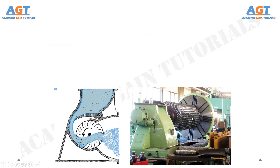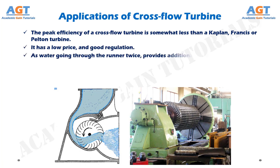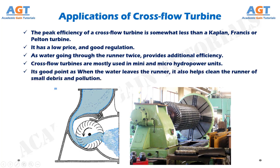The peak efficiency of a cross flow turbine is somewhat less than a Kaplan, Francis, or Pelton turbine. It has a low price and good regulation. As water goes through the runner twice, it provides additional efficiency. Cross flow turbines are mostly used in mini and micro hydropower units. A good feature is that when the water leaves the runner, it also helps clean the runner of small debris and pollution.